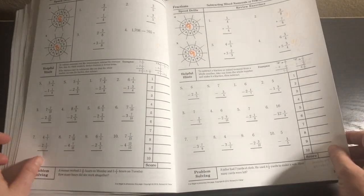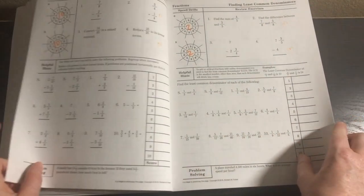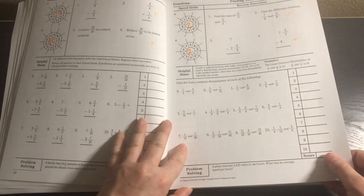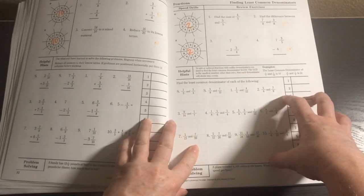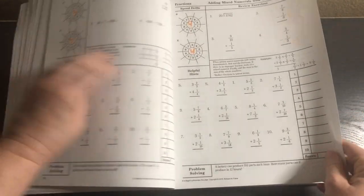There's always a problem solving problem at the bottom, which is a word problem. The format of this book is the same throughout with the speed drills, review exercises, helpful hints, the main lesson portion, and then problem solving.